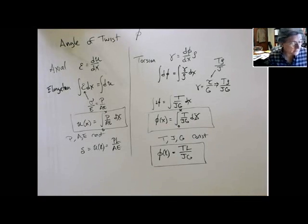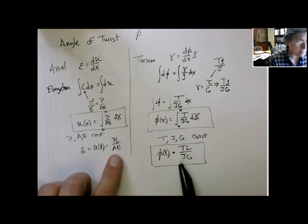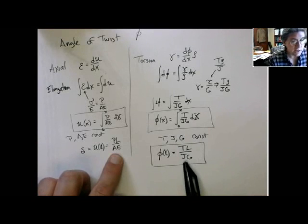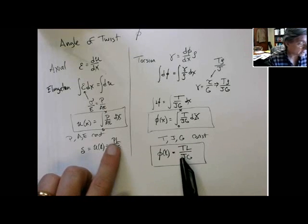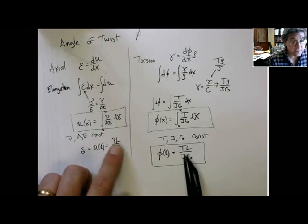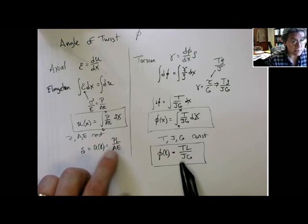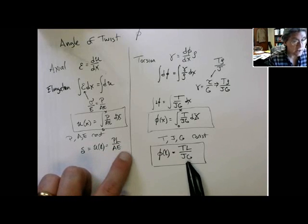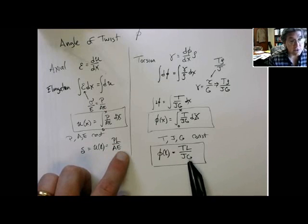So that's the angular twist. And if you memorize this equation, you can see the same equation. Instead of P, you get the torque T, L is still the length. J is the geometric factor for torsion. And then, since we're dealing with shears, we have G, the modulus of rigidity, as opposed to Young's modulus.